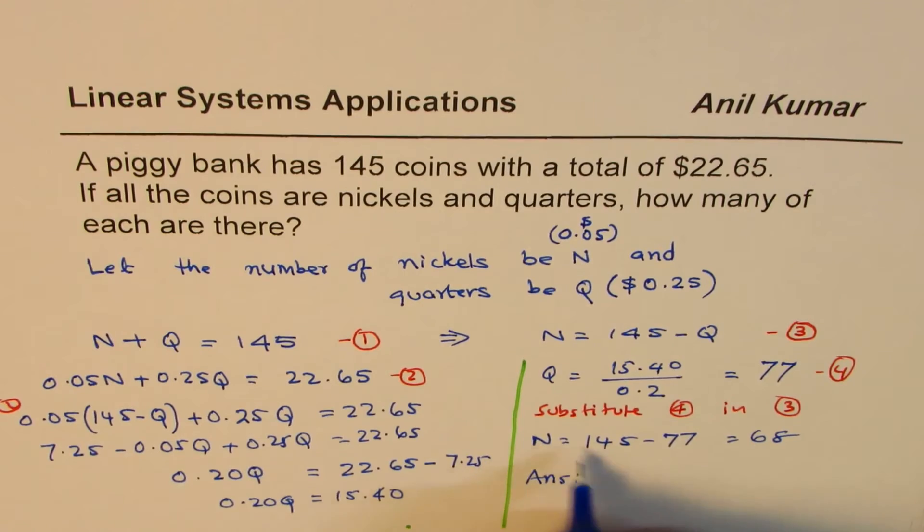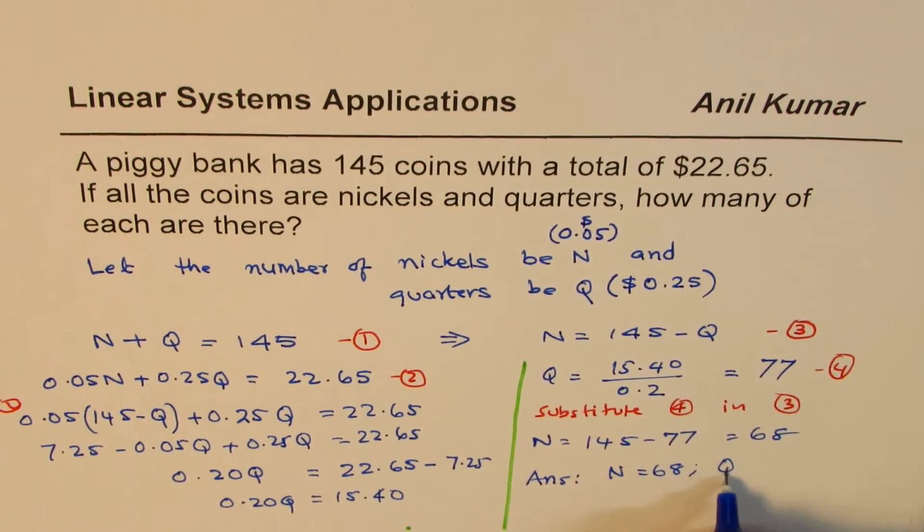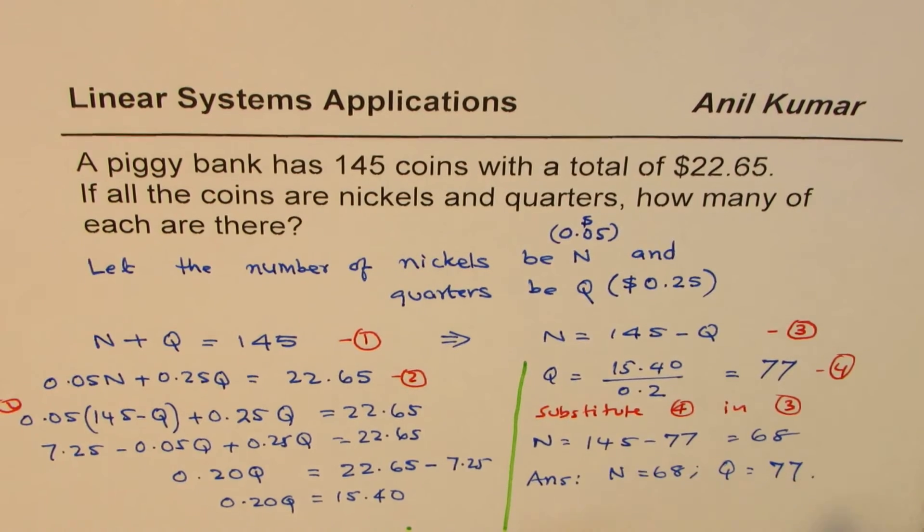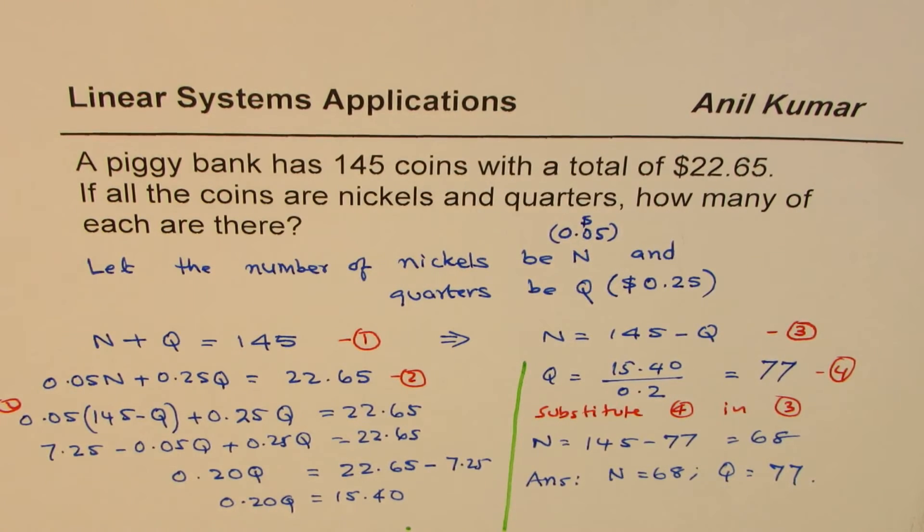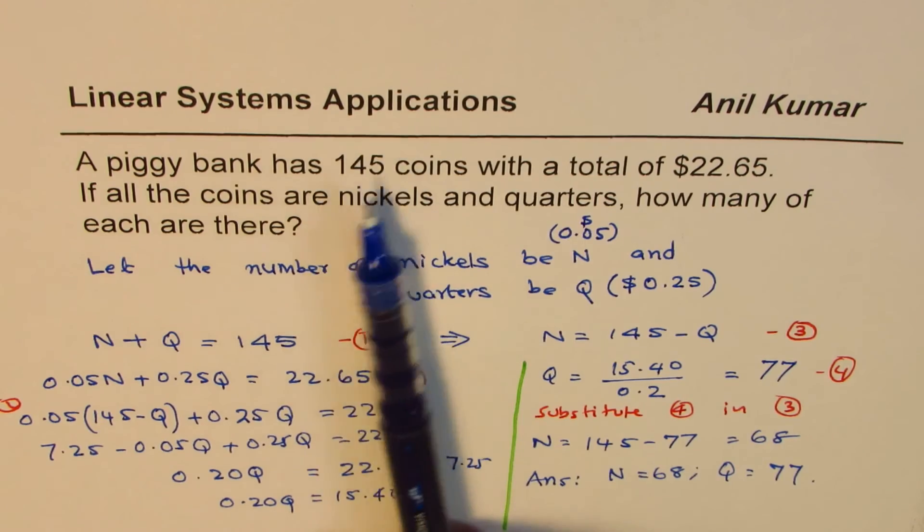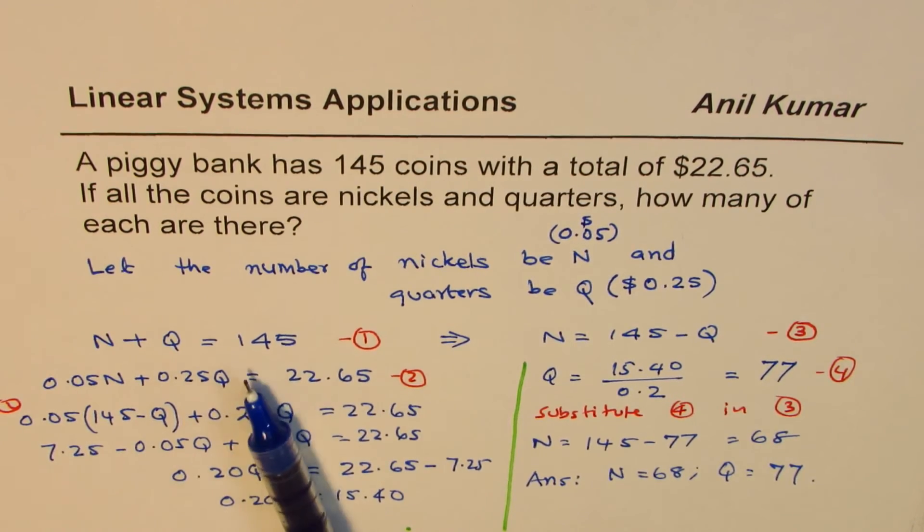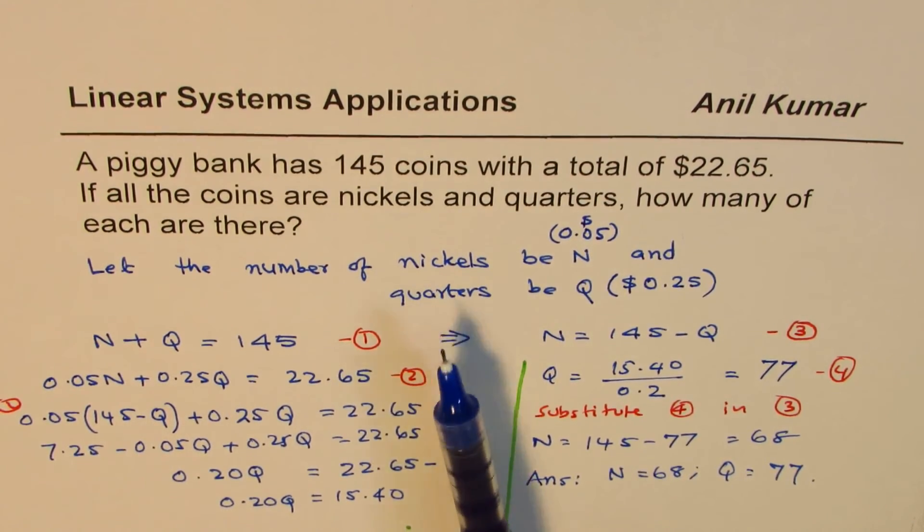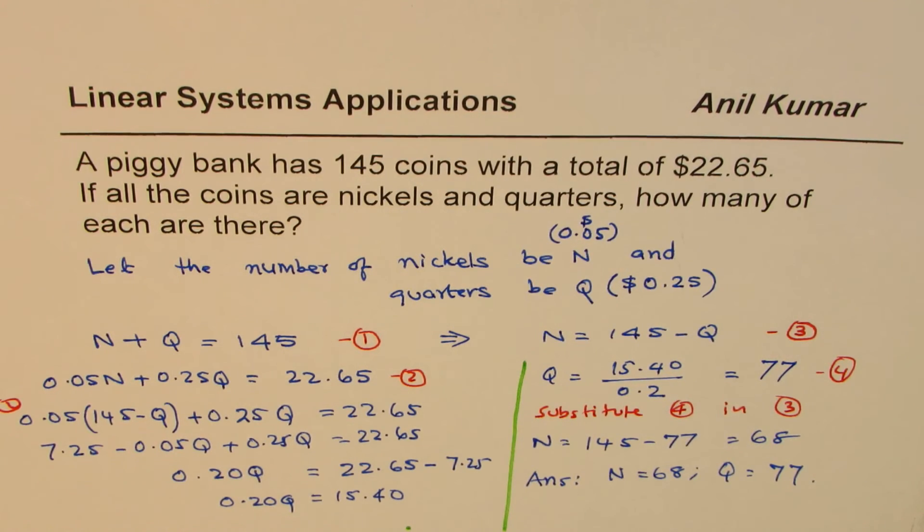So we get the total number of nickels and quarters. So our answer is, number of nickels is 68, and number of quarters is 77. So that is how you can actually solve such questions. So from the given conditions, write two different equations after defining your variables, very important. And then you can do substitution or elimination to find the answer.